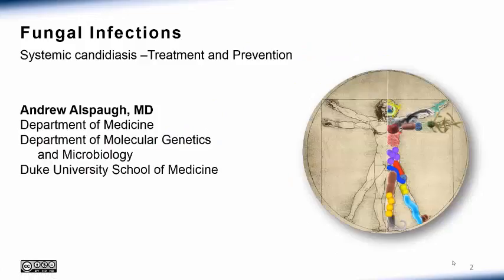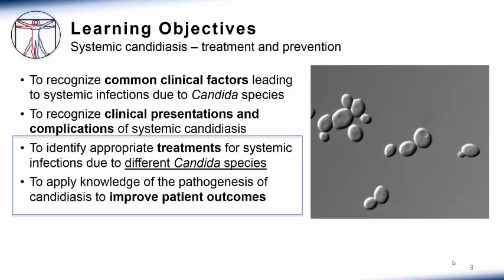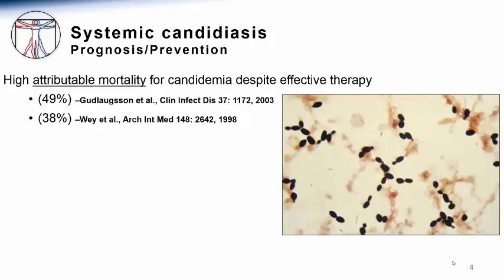This is Andy Alspaugh from Duke University School of Medicine. In this presentation, we are going to focus on the treatment and preventive strategies for systemic infections due to various Candida species. We will also explore the growing knowledge about Candida pathogenesis and patient risk factors for this infection to imagine better treatment options. The first question I would like to pose is why it is important to treat these infections — how serious is the disease, especially Candida bloodstream infections?